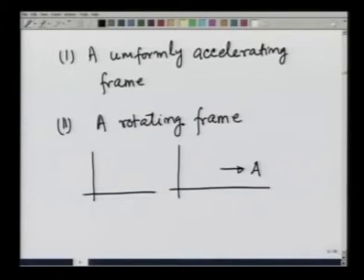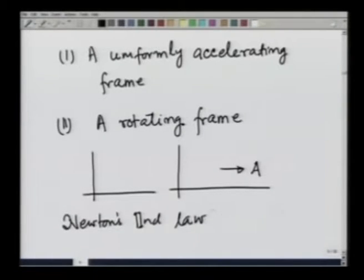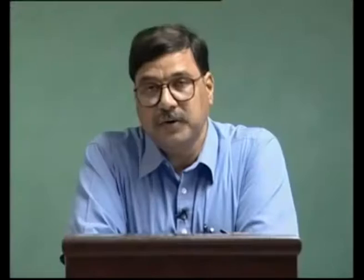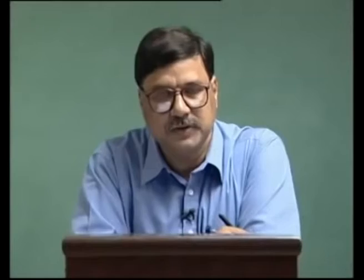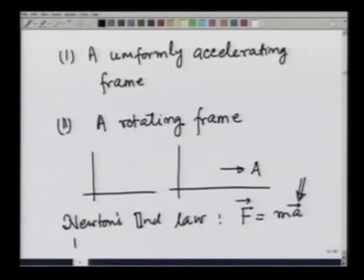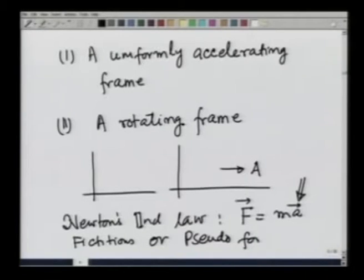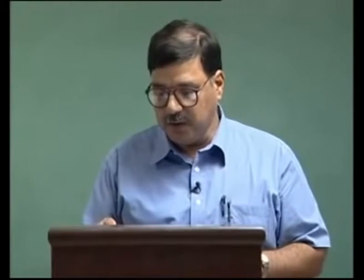We want to solve problems in these frames applying Newton's second law: force equals m times acceleration. Therefore, if you see things accelerating without any apparent force to account for this apparent acceleration, you have to introduce certain forces, and we call these forces the fictitious or pseudo forces. For example, if you are sitting in a uniformly accelerating frame, you imagine a force pulling things backwards — a fictitious force equal to m times a.